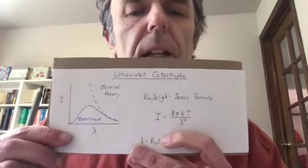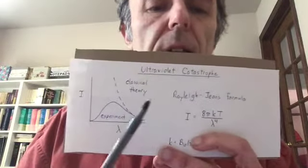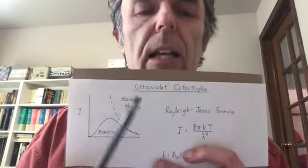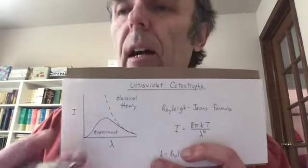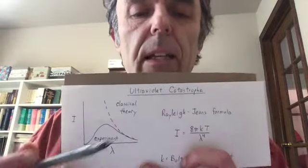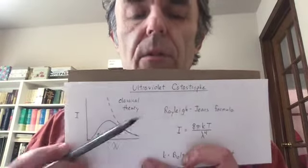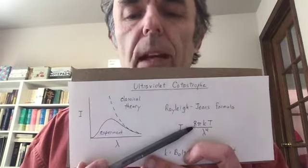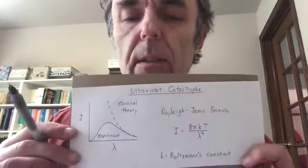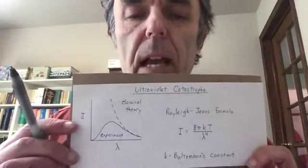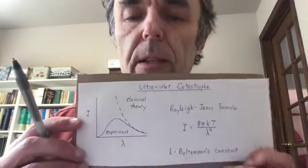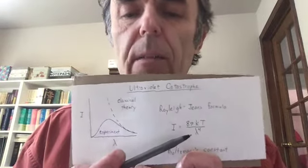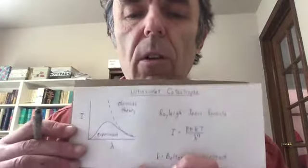Blackbody radiation had been described in classical theory. Around the time that Planck began working on this, there was a classical theory described by the Rayleigh-Jeans formula. This formula said the intensity is equal to 8π times Boltzmann's constant K times the absolute temperature divided by wavelength to the fourth power.